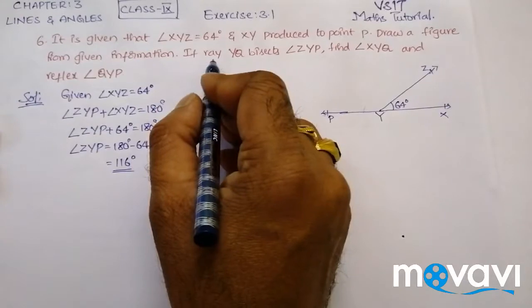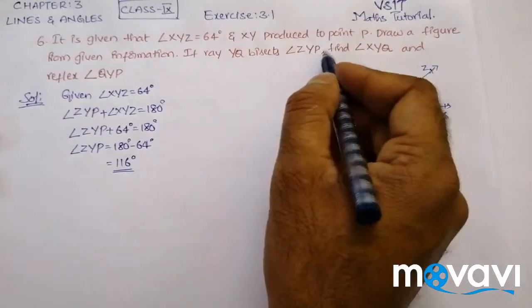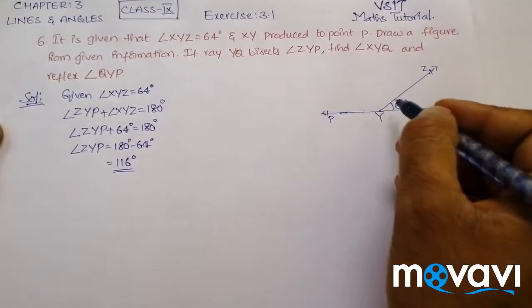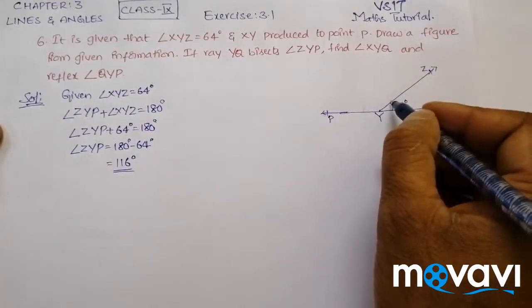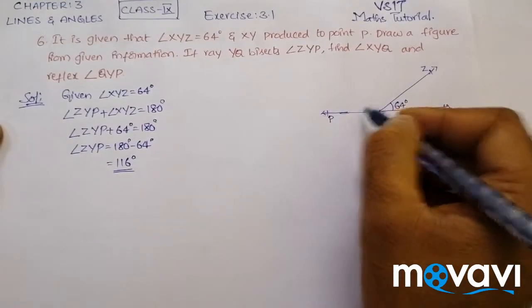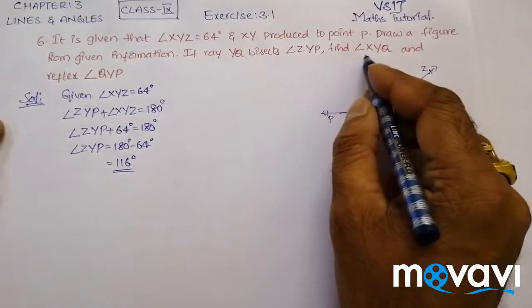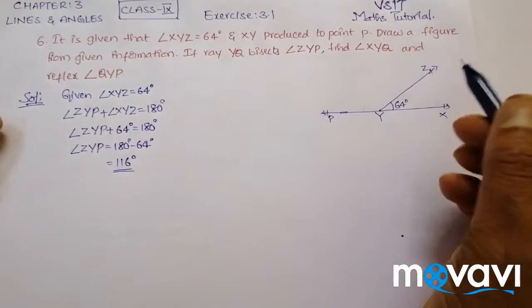Now, if Ray YQ bisects Angle ZYP, then we need to find Angle XYQ.